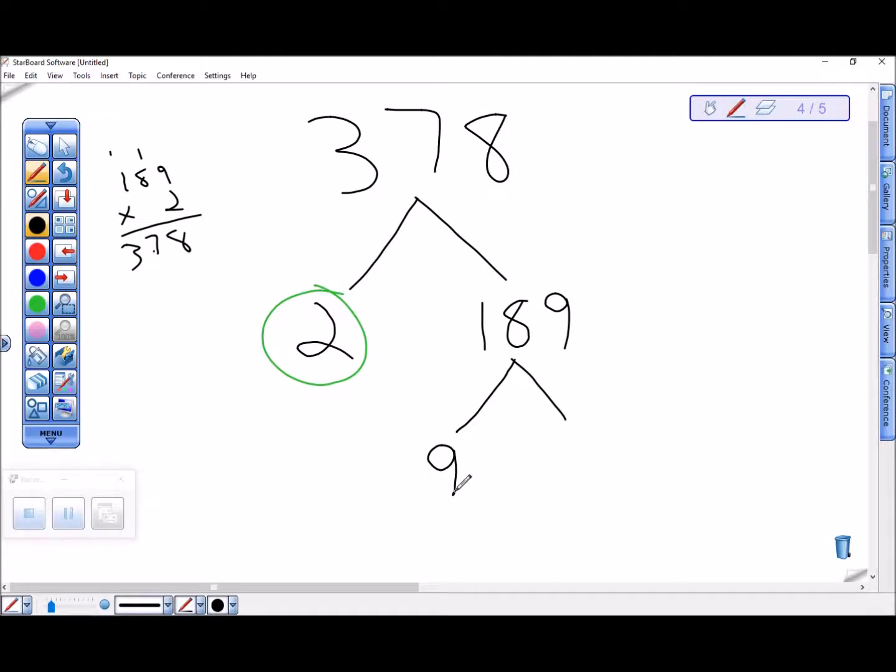So if this was 9, 9 goes into 18 twice and into 9 once. So 189 is 9 times 21.